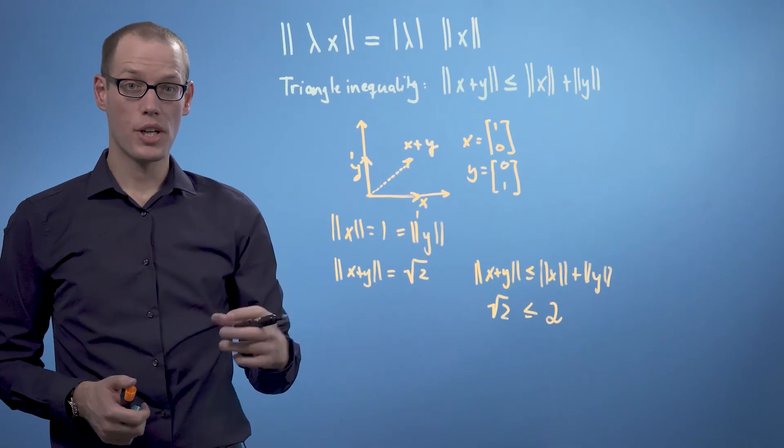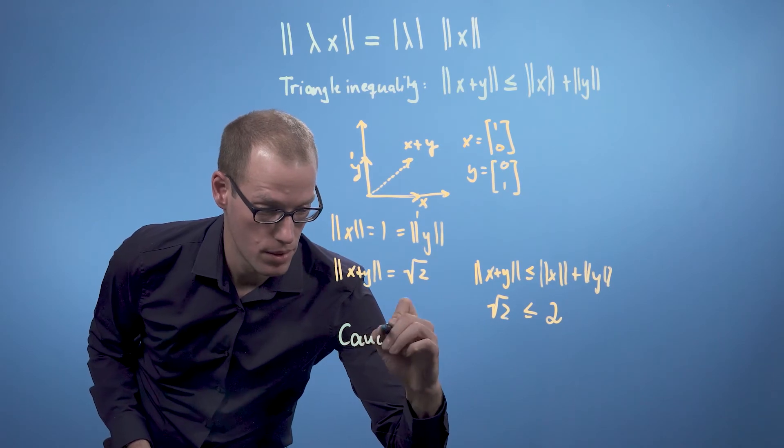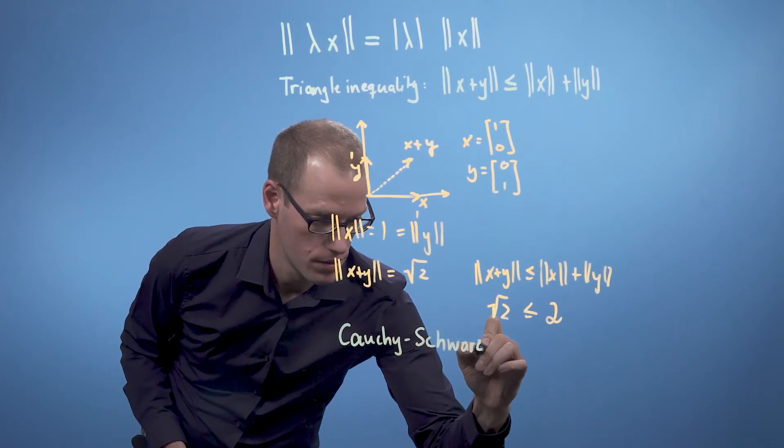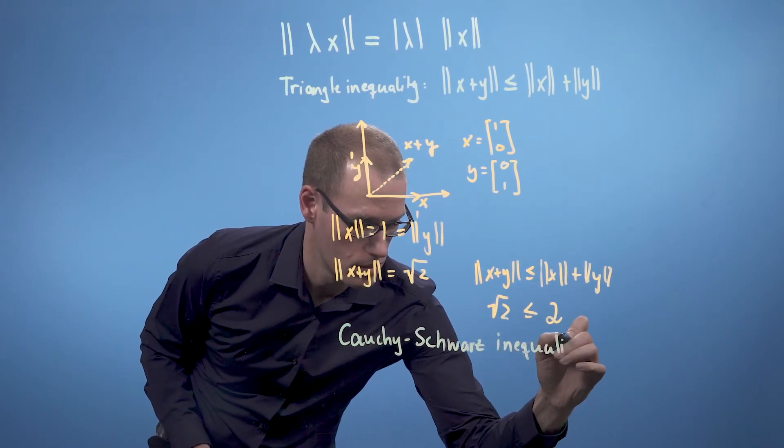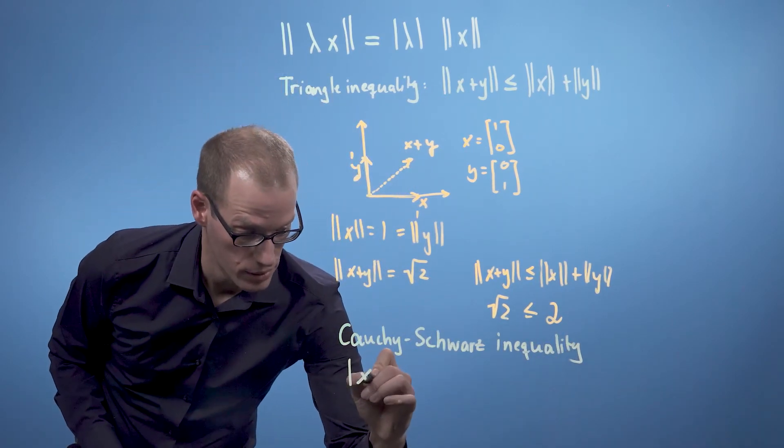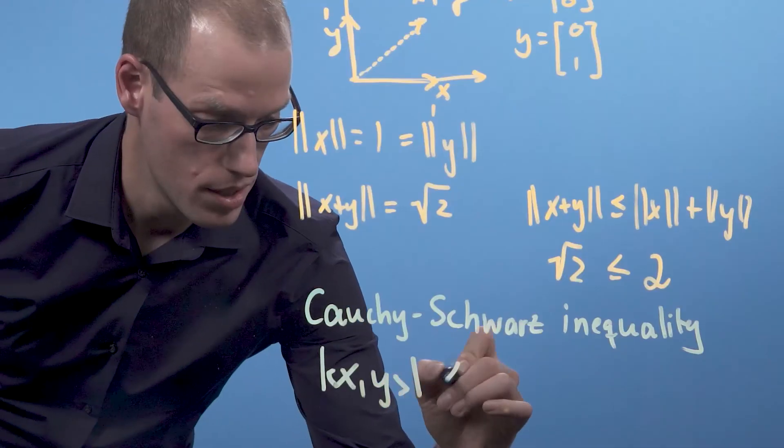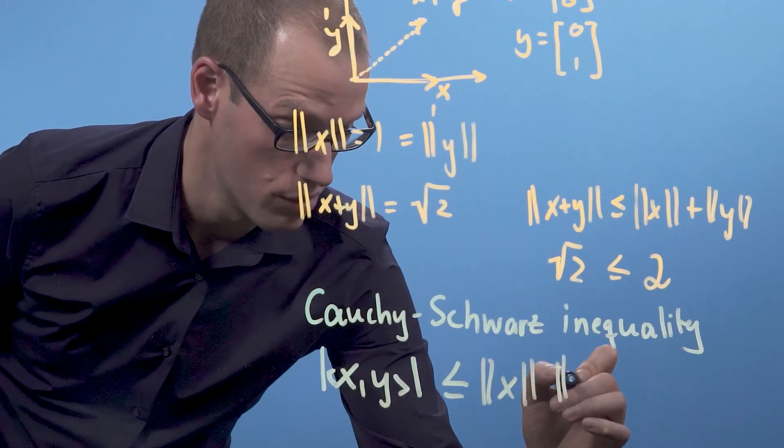And there's another inequality I would like to mention, which is the Cauchy-Schwarz inequality. And that one says that the absolute value of the inner product of x with y is smaller or equal than the product of the individual norms of the two vectors.